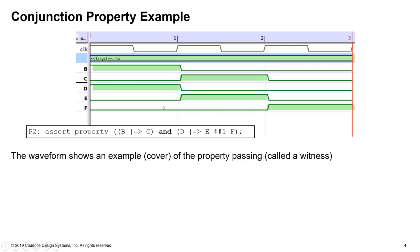So what we're seeing here is we're looking at a view of Jasper in Visualize, and that's an example of the property passing which is known as a witness.